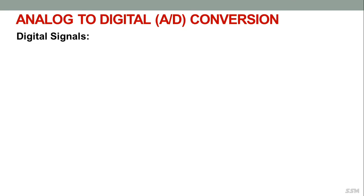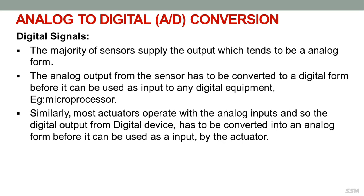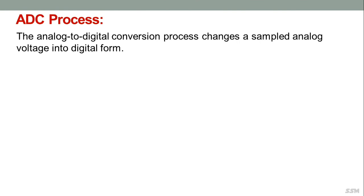The majority of sensors supply output in analog form. Where a microprocessor is used as part of a measurement or control system, the analog output from the sensor has to be converted into digital form before it can be used as input to the microprocessor. Similarly, most actuators operate with analog inputs, so the digital outputs from the microprocessor must be converted into analog form before use by the actuator.